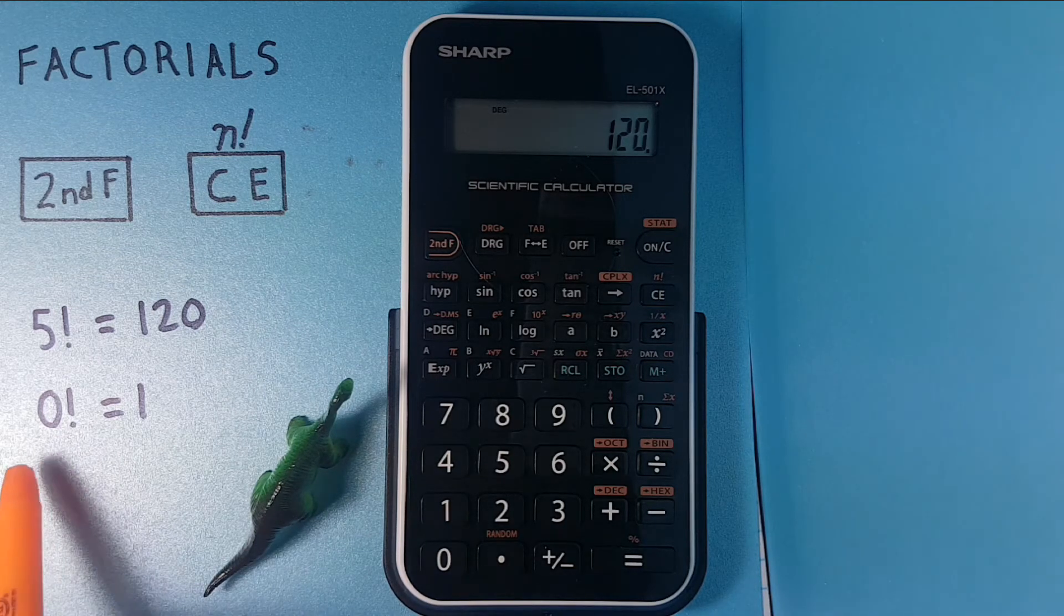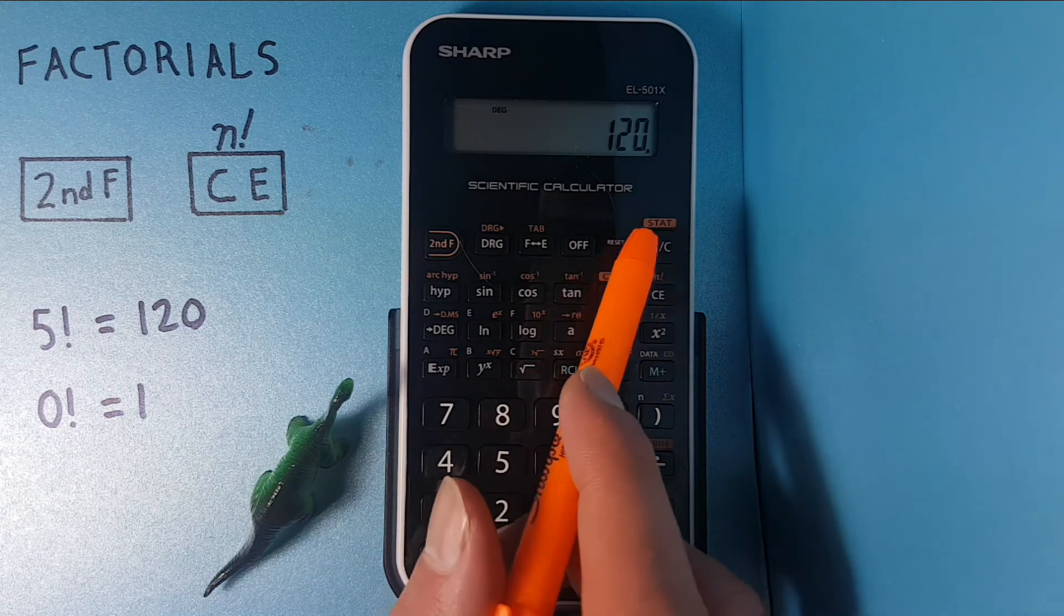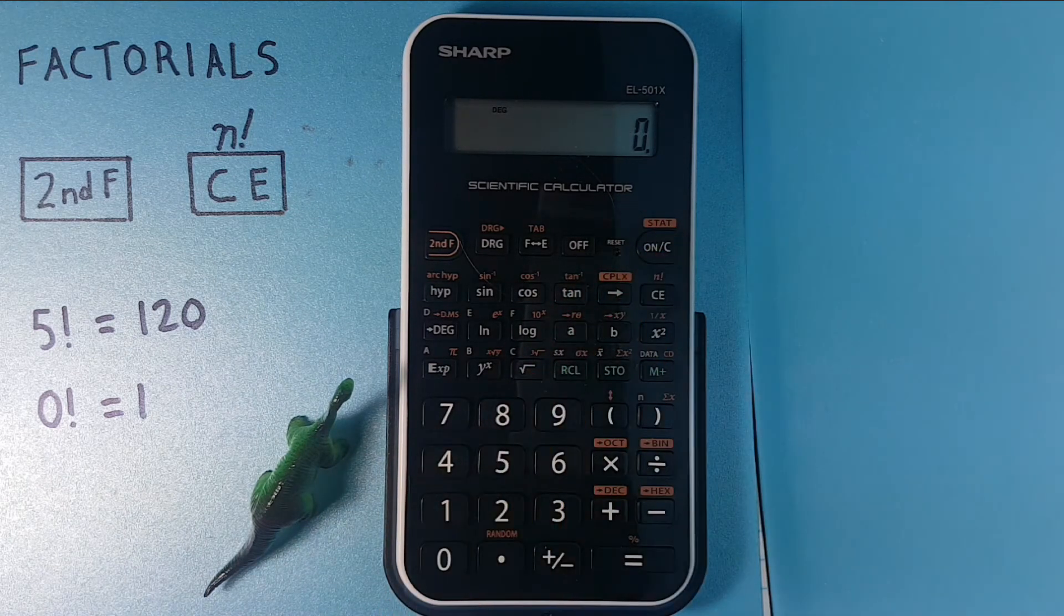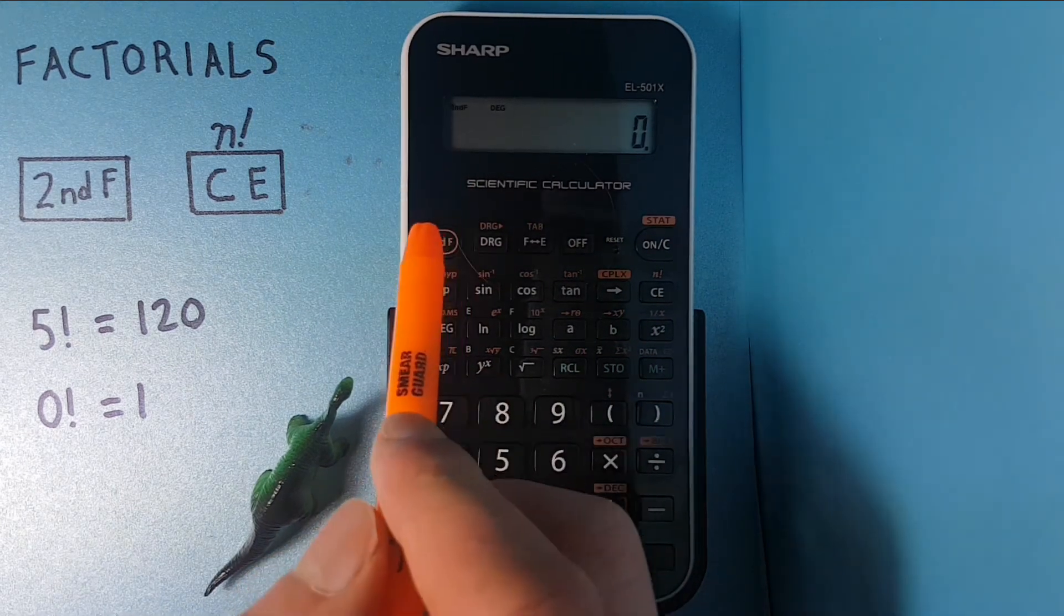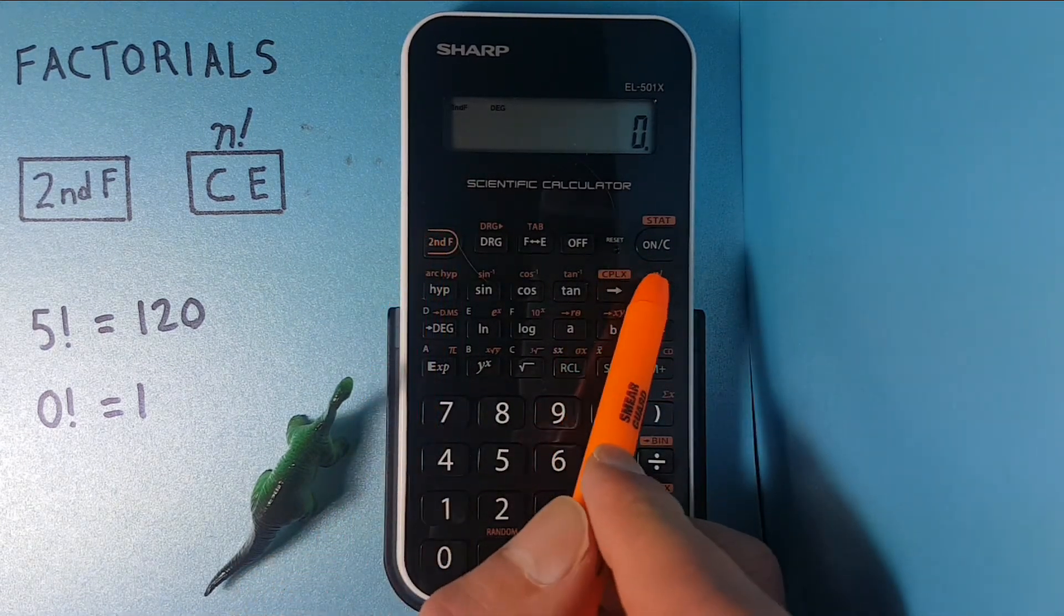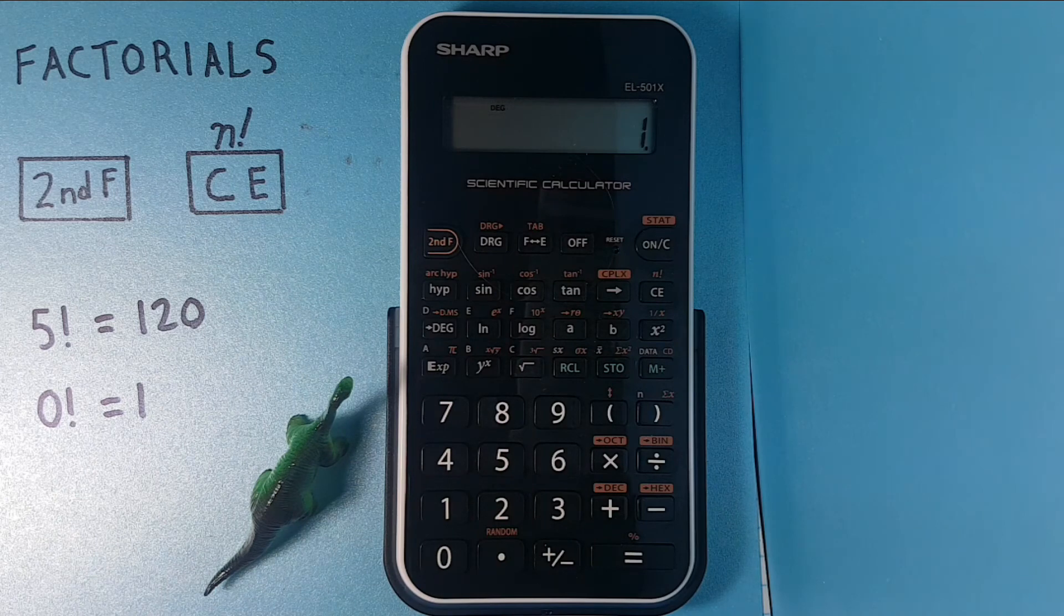Let's try one more. Let's try zero factorial. So we have zero on the screen and then we go second function, CE factorial, and we get one, which as we know is correct.